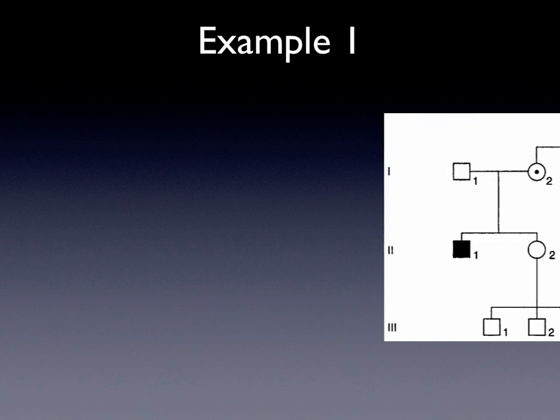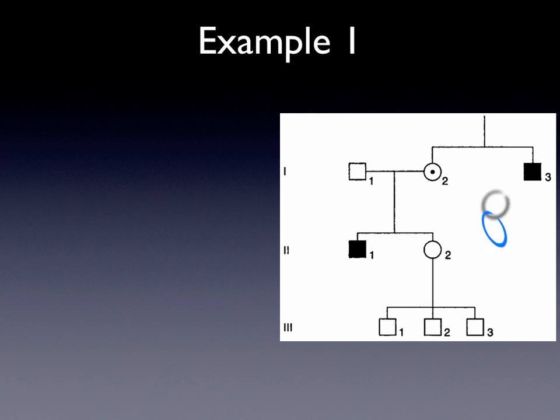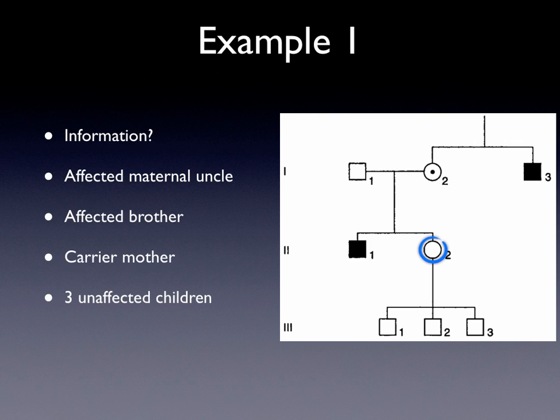Now that we have that in our background, we can look at the pedigree. What information does this give us? We have an affected maternal uncle, an unaffected brother, the mother is a carrier, and we have three unaffected children. This is our basic pedigree information. Now we can start doing our prior and look at our Bayes Theorem.